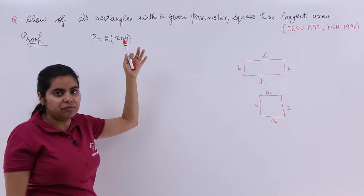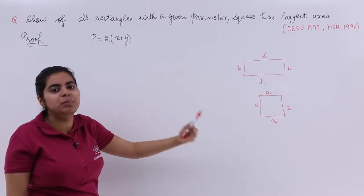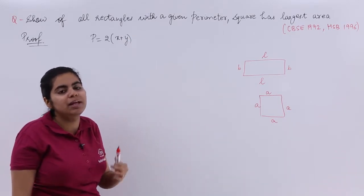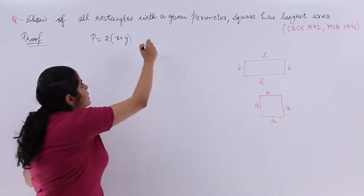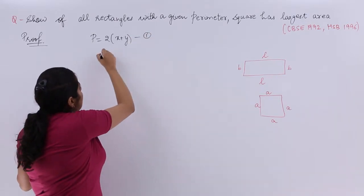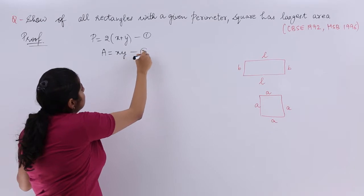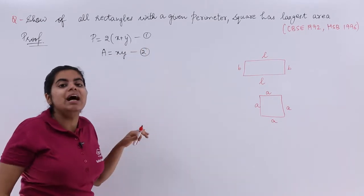You have to name this yourself, right? Labeling should be done yourself. Let P equal perimeter, X equal length, Y equal breadth. This is equation number 1. And area of the rectangle would be X into Y. This is equation number 2.